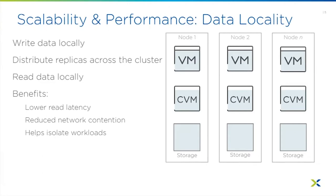One of the key differentiators of Nutanix HCI is data locality. Data locality is the secret sauce of our file system — it means the hot data for a VM stays on that same node. Looking at the diagram, we have multiple nodes, and the VM on node one keeps all its storage and hot data local to that node.